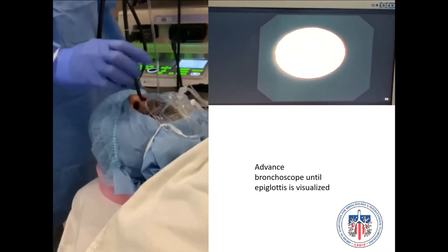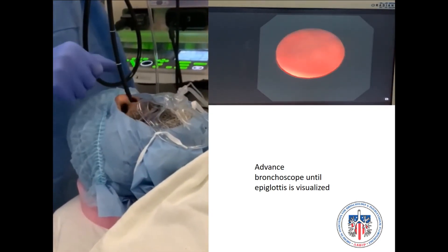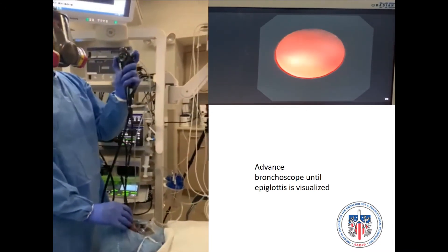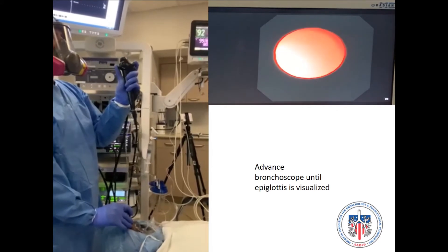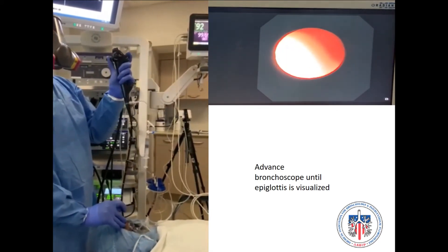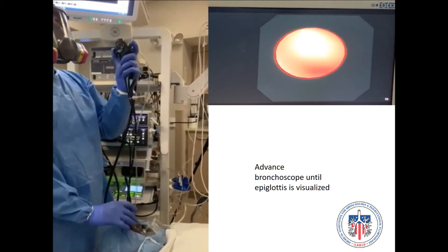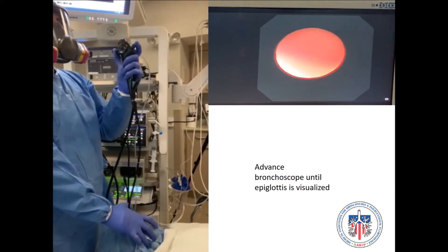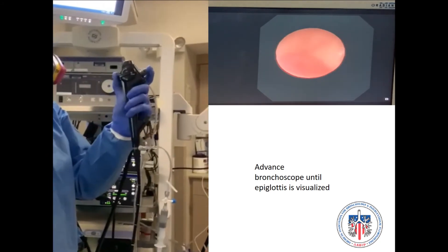During this part, suction can be applied to allow better visualization of the anatomical structures. A jaw thrust maneuver, as seen in the video performed with the same hand holding the bronchoscope, could also help to allow better visualization of the epiglottis.